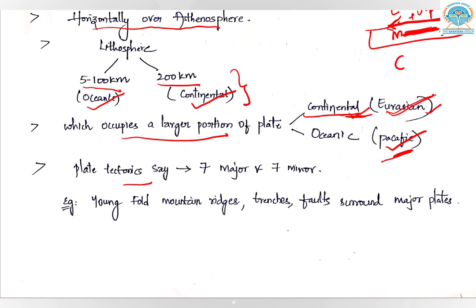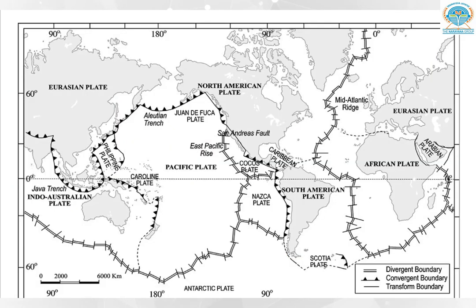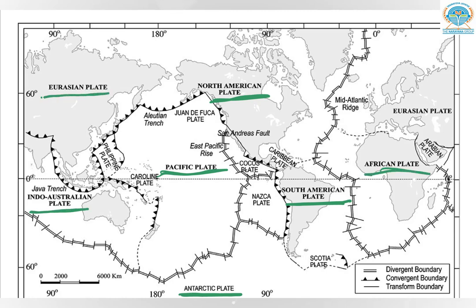According to plate tectonics, we have seven major plates and several minor plates. Major plates are surrounded by fold mountains, ridges, trenches, and faults. The major plates — underlined in green on the map — are: Antarctic plate, North American plate, South American plate, Pacific plate, Indo-Australian plate, African plate, and Eurasian plate. These are very large when compared to other landmasses.